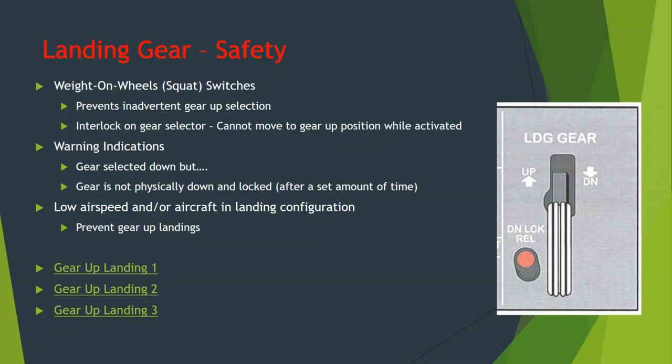The gear handles have a down-lock release that can override the interlock — this is in case the plane is in the air and for some reason they can't get the handle to move to the up position because of a failed interlock system. It's also used in maintenance for certain testing.